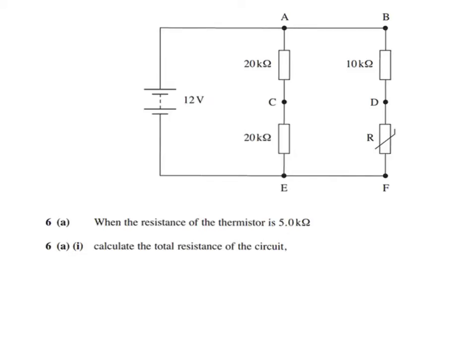So let's kick off. The first question asks, when the resistance of the thermistor is 5.0 kilo-ohms, calculate the total resistance. So the first thing to do is deal with the series resistors in this case. We've got two sets of series resistors, one on that loop there and another in this loop here. I'm going to call these ones here R1 and these ones here R2.